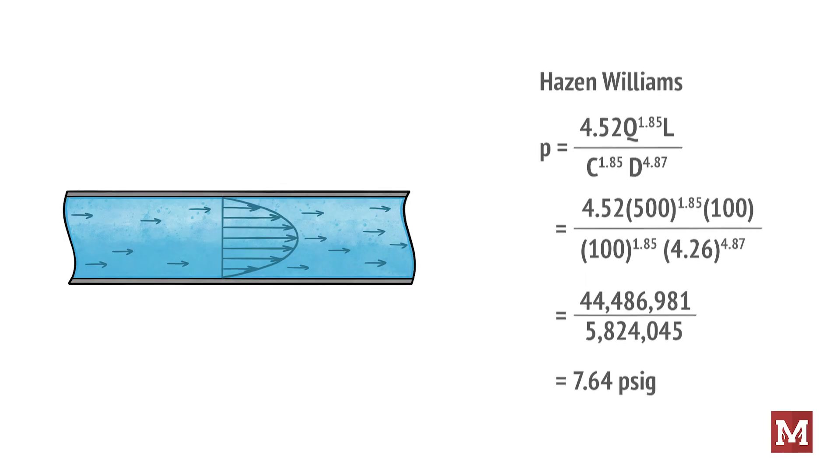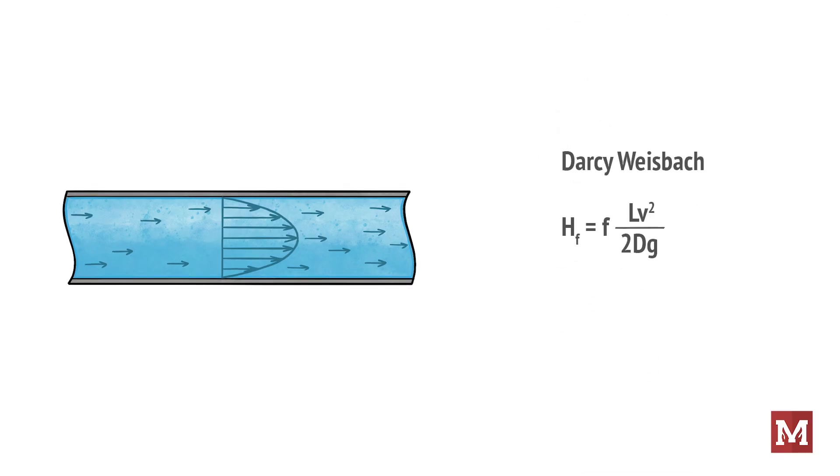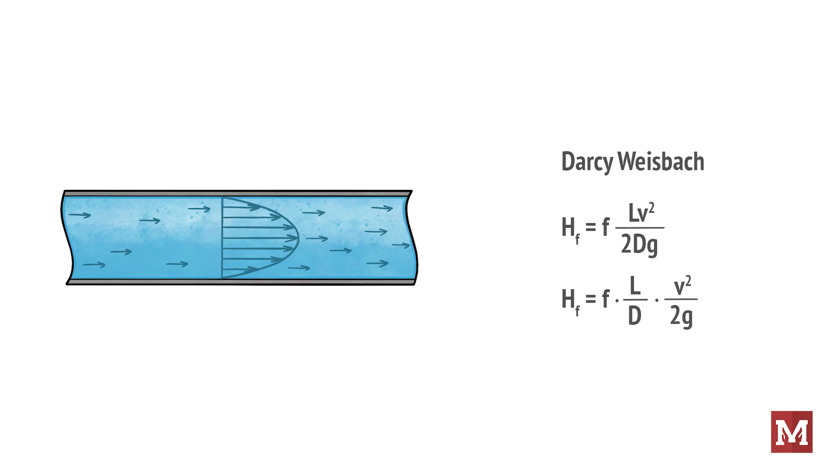Now let's calculate pressure loss using Darcy-Weisbach method. This method measures pressure loss in terms of feet of head. So the equation is H sub f equals f times ratio of the length of the pipe divided by its inner diameter times the velocity of the fluid in the pipe squared divided by twice the gravitational constant.